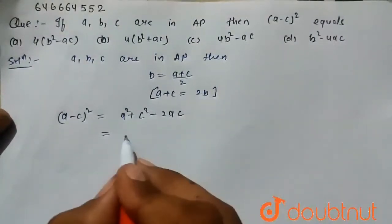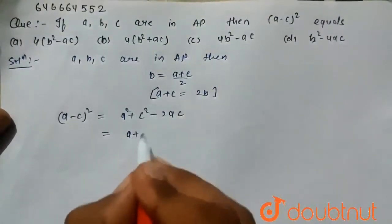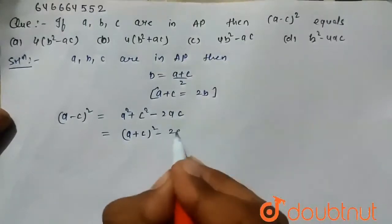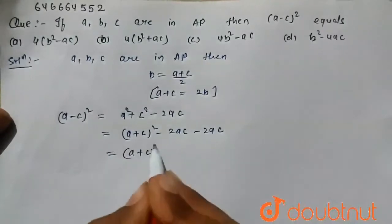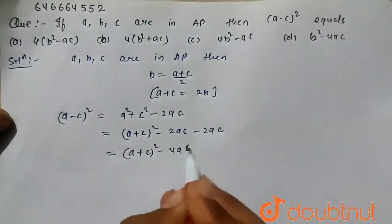And we know that the value of a square plus c square is written as a plus c whole square minus 2ac minus 2ac. So a plus c whole square minus 4ac.